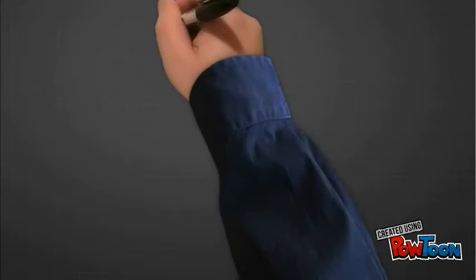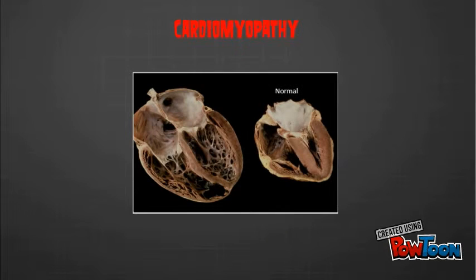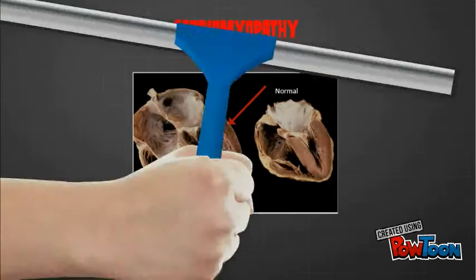One of the most common, potentially fatal developments of Chagas disease is cardiomyopathy. This is a weakening of the heart wall, leading to an enlarged and weakened heart. This kind of symptom can initially go unnoticed for many years, increasing its deadliness.